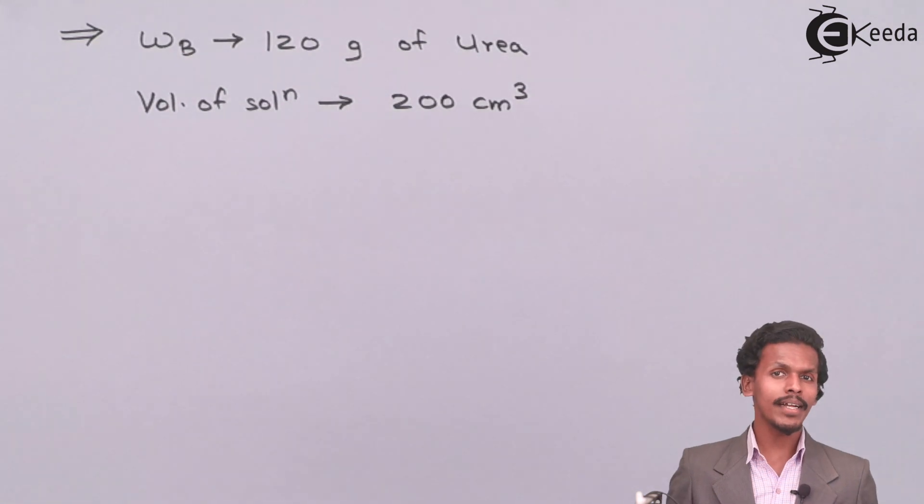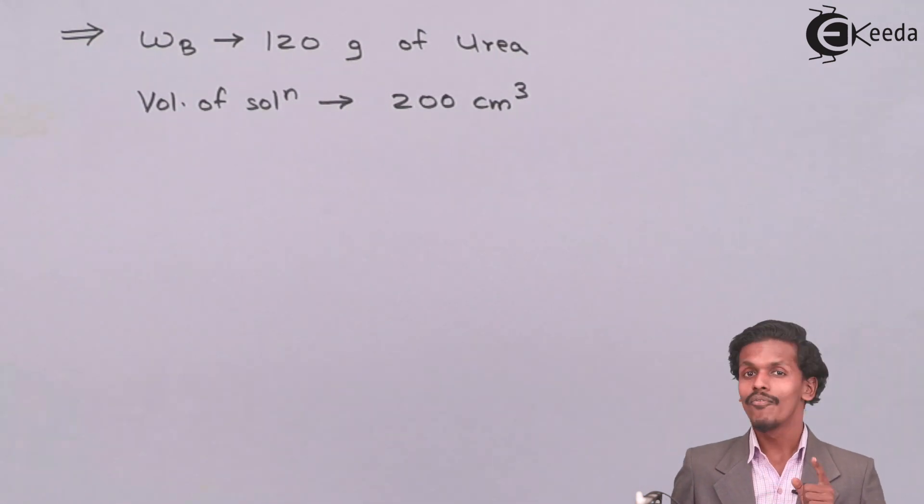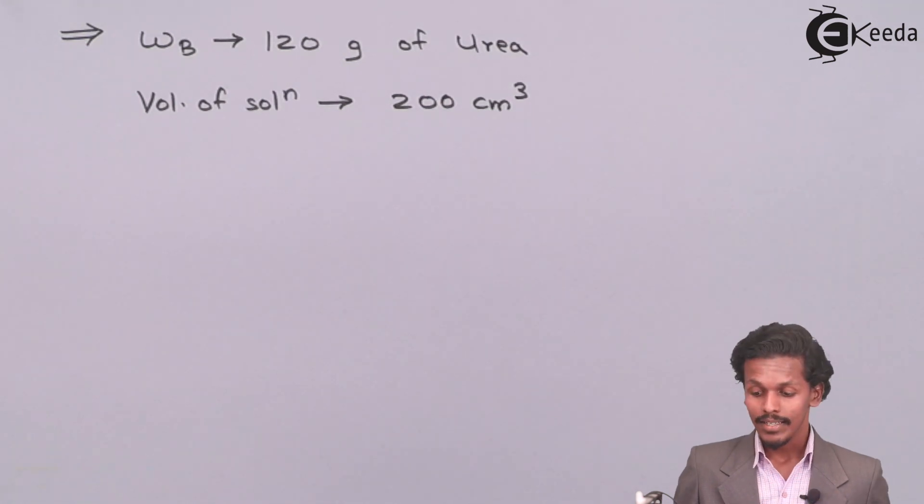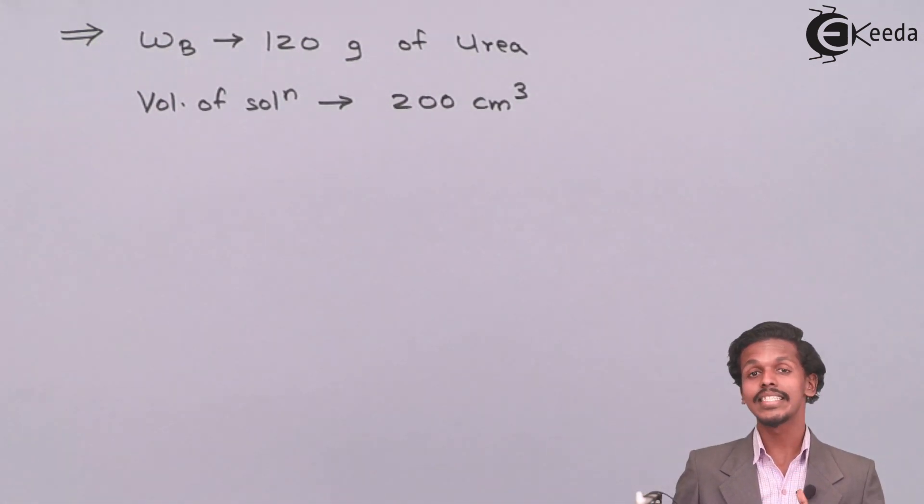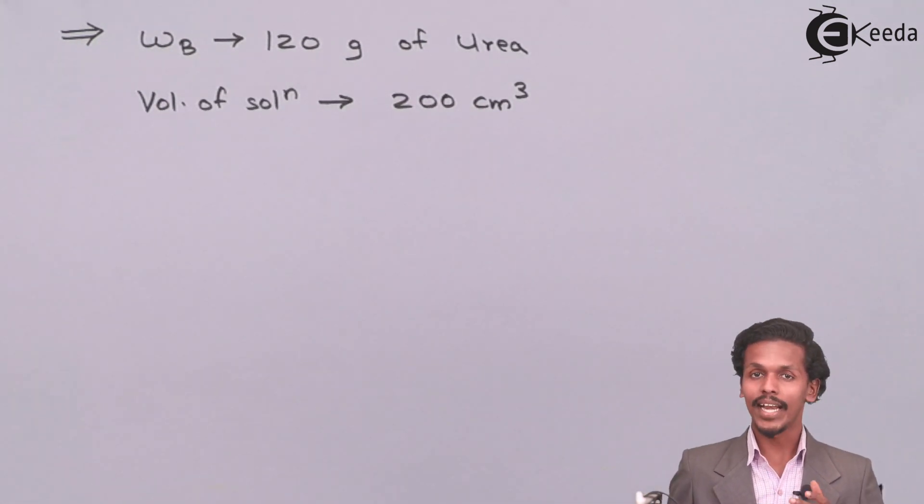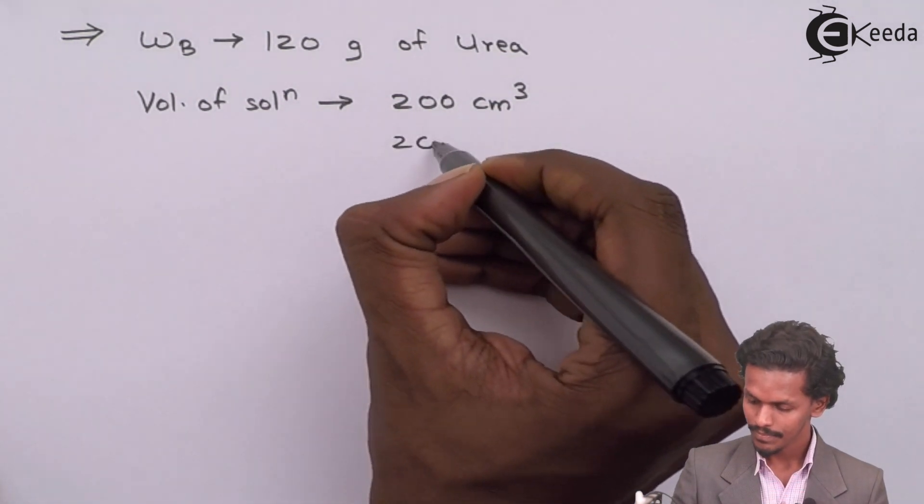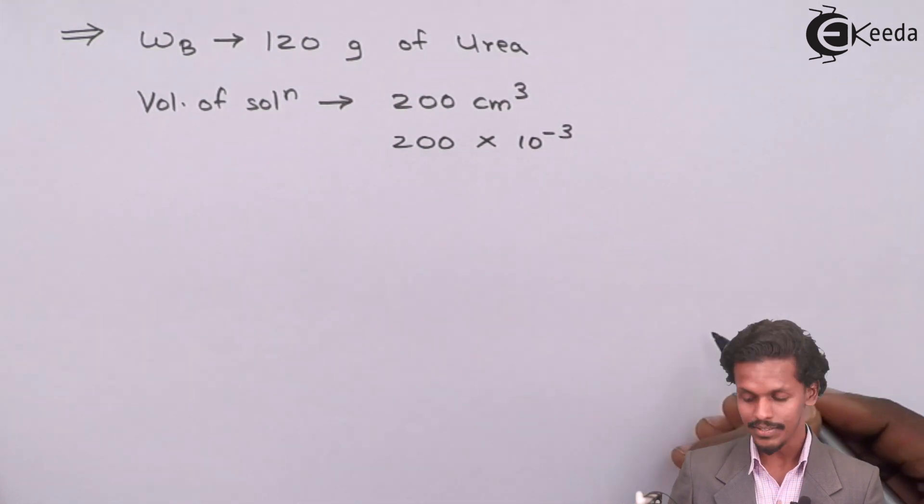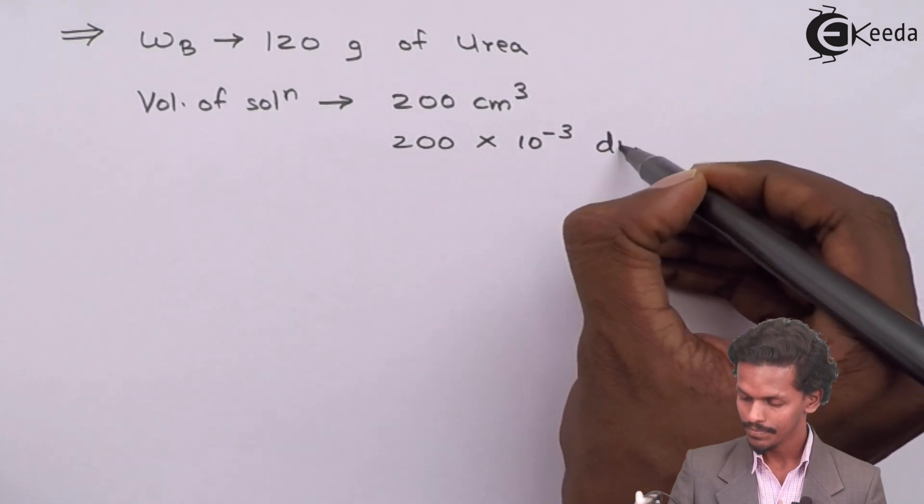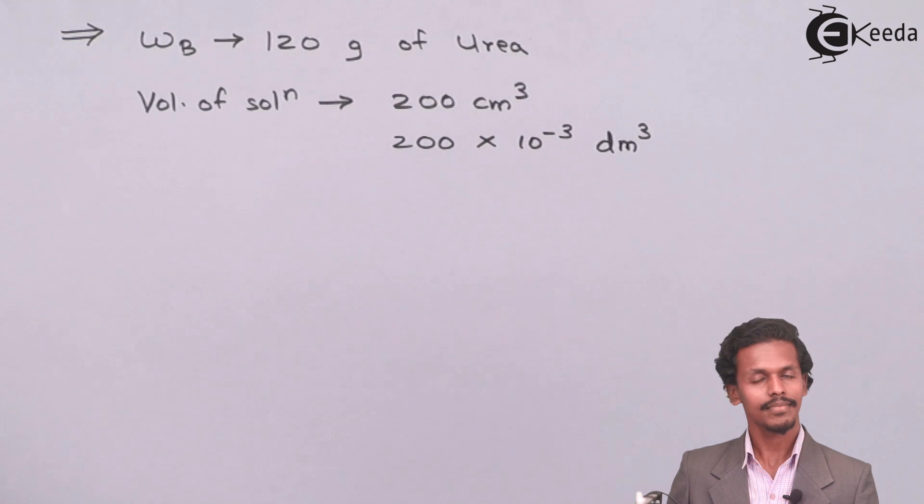We should note that according to the formula of molarity, it is the number of moles of solute dissolved in volume of solution in dm³. But the question given to us is in 200 cm³, so we have to convert this cm³ into dm³ by multiplying it by 10 raised to minus 3. Simple.